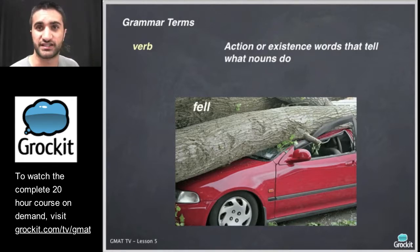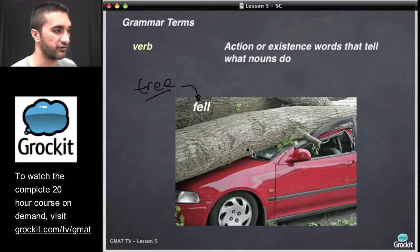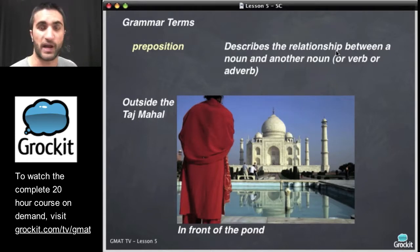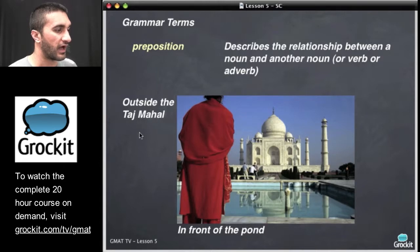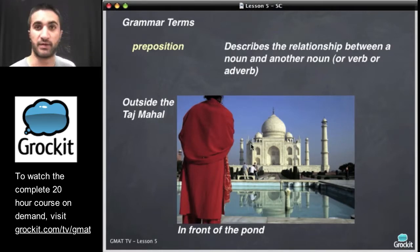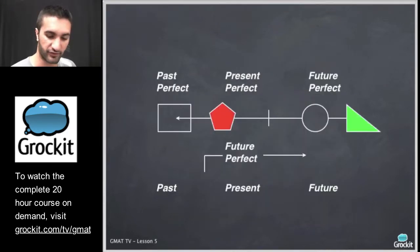Verbs are action or existence words that tell us what nouns do. We see this tree fell — the noun, the tree, fell on the car. 'On' being a preposition. So let's talk about prepositions: they describe the relationships between a noun and another noun or verb or adverb. Outside the Taj Mahal, in front of the pond — so this person is outside the Taj Mahal and in front of the pond. Prepositions tell us about the relationship between nouns and other nouns, verbs, and adverbs.